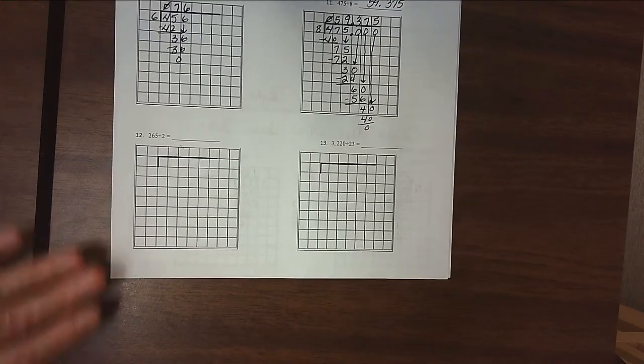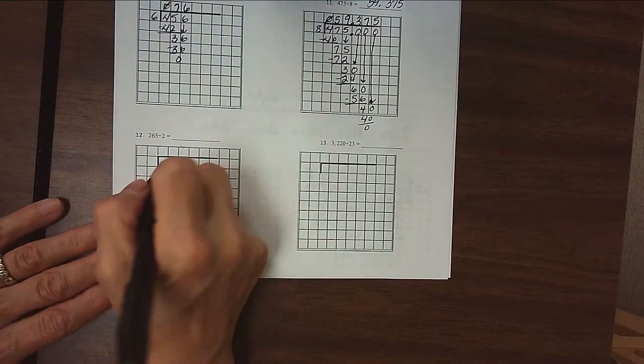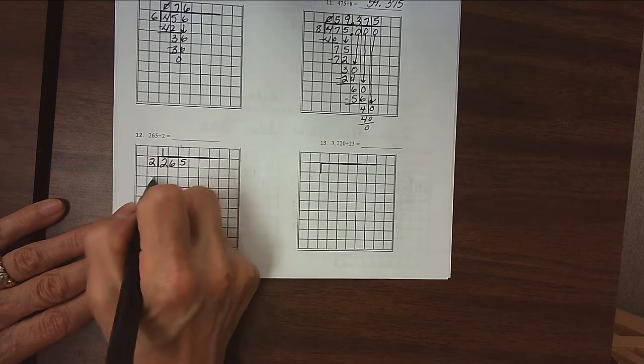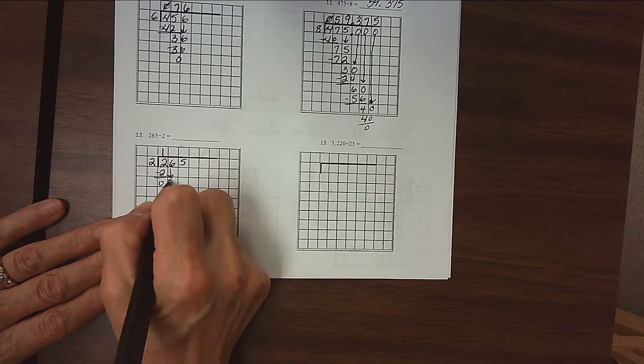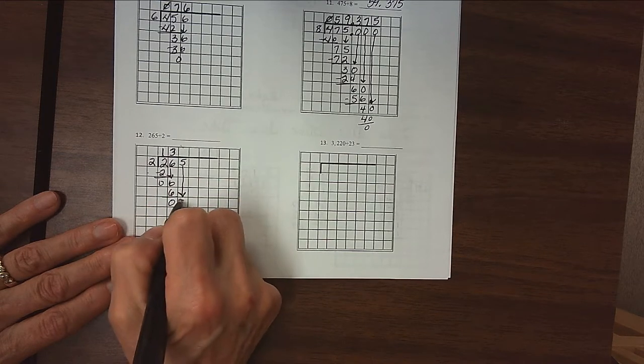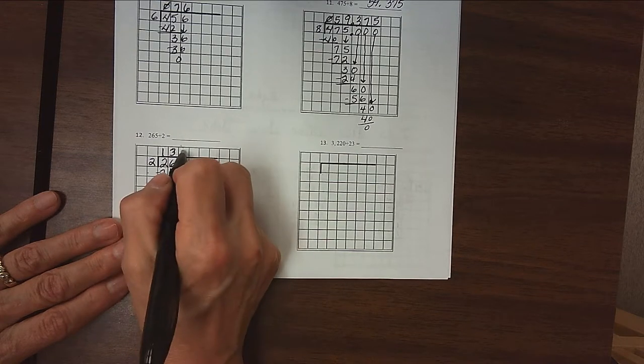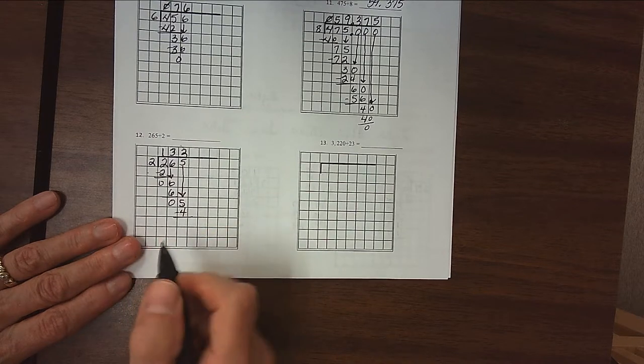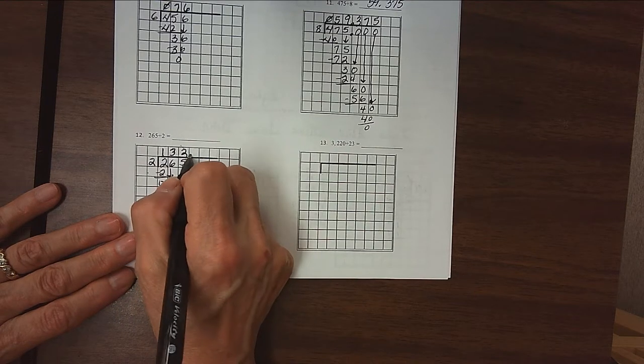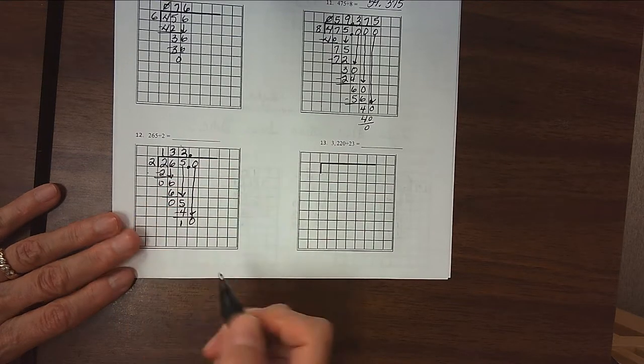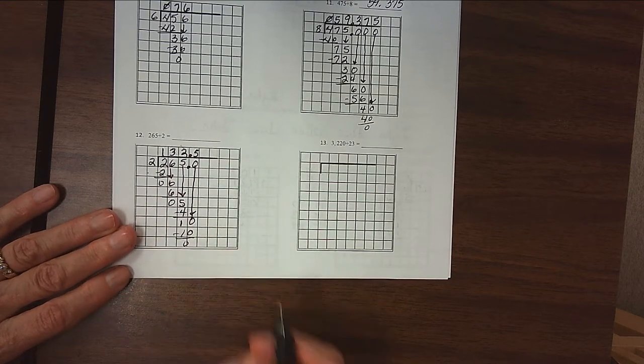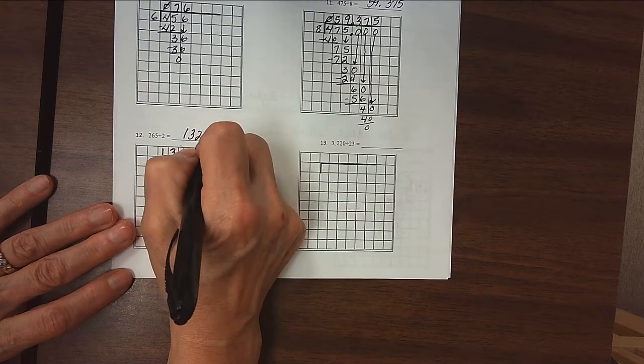All right, 2 more on this page. We've got 265 divided by 2. 2 divides into 2 once. Subtract, we get 0. Bring down our 6. 2 divides into 6 three times. Subtract, 0. Bring down our 5. 2 divides into 5, 2 times 2 is 4. Subtract, we get 1. Add a decimal point in and out of the house. Bring the 0 down to make 10. 2 divides into 10 five times. Subtract, we get 0. So our answer here is 132 and 5 tenths.